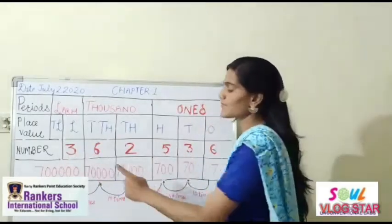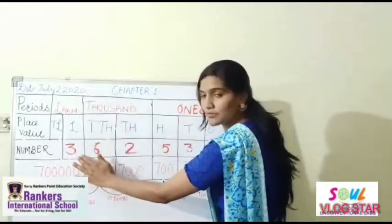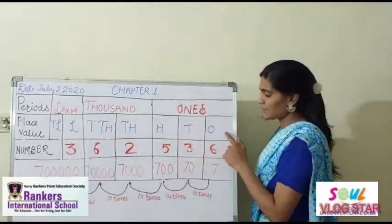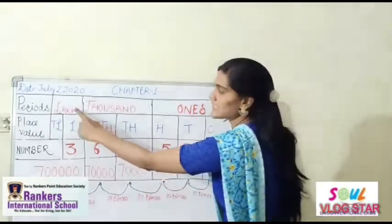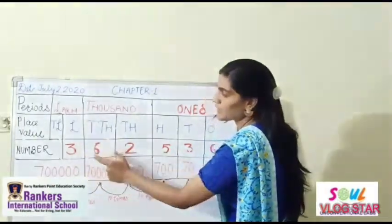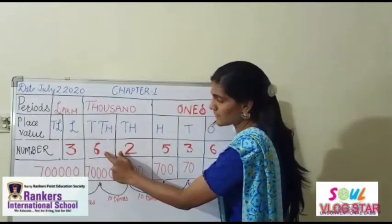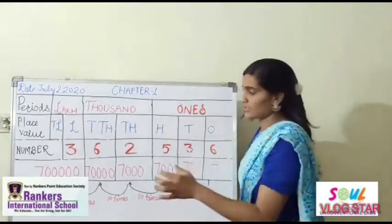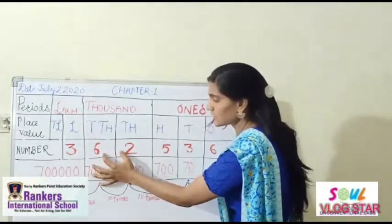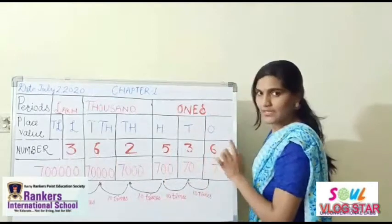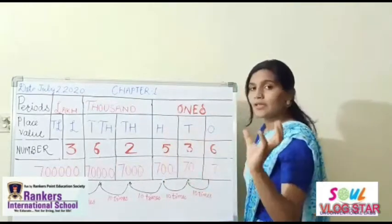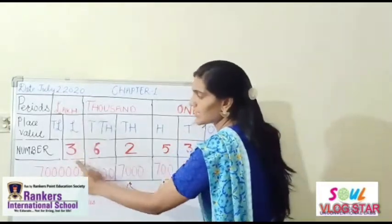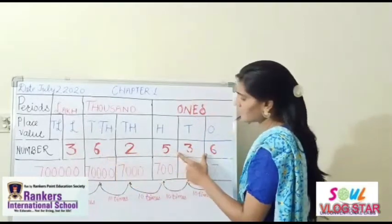Let me give you one example. I have written the number: 3 in the lakhs place, 6 in the ten-thousands place, 2 in the thousands place, 5 in the hundreds place, 3 in the tens place, and 6 in the ones place. So reading from the left: the lakhs group gives us 3, the ten-thousands and thousands combine to give 62,000, and the remaining places give 536. So the number is read as 3,62,536.